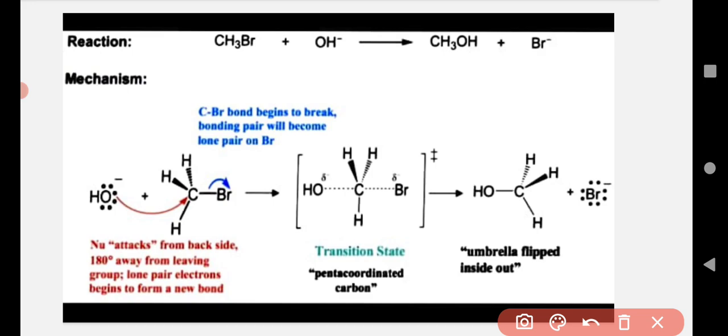As we know from the earlier video, SN1 mechanism is a two-step mechanism. In SN1 mechanism, carbocation is formed and racemic mixture is formed. But here we are observing that this is a nucleophilic substitution reaction, meaning that alkyl halide converts into alcohol.